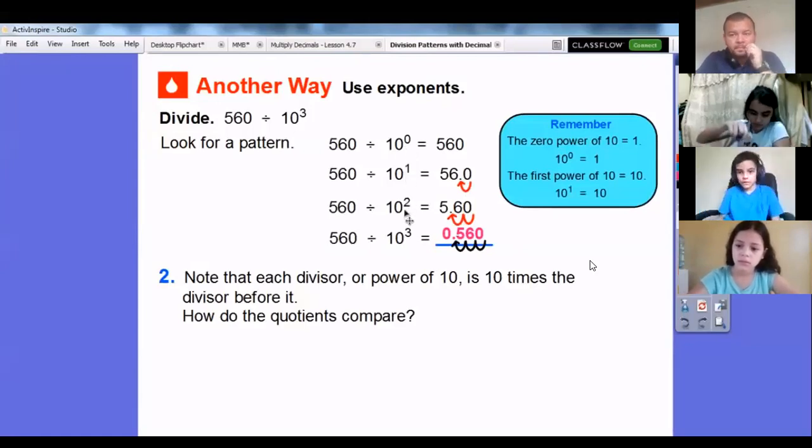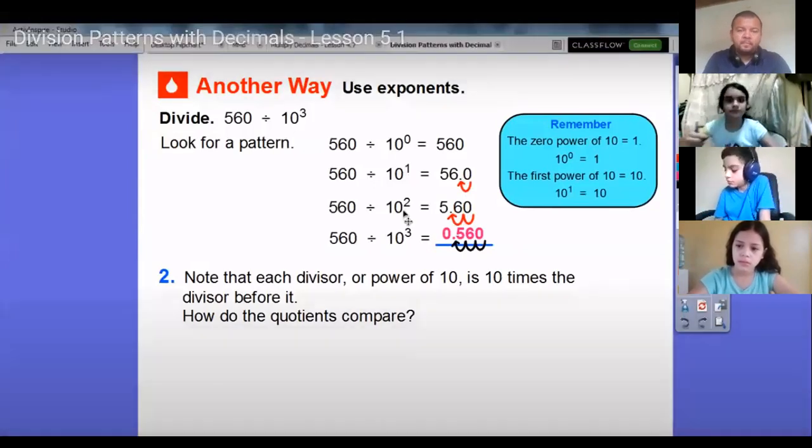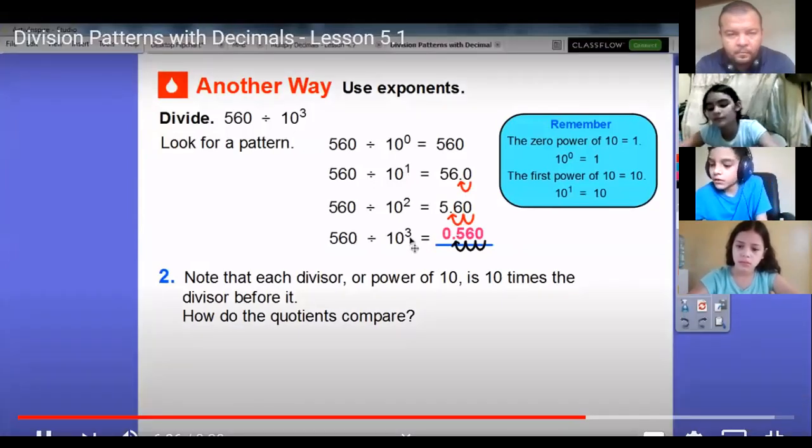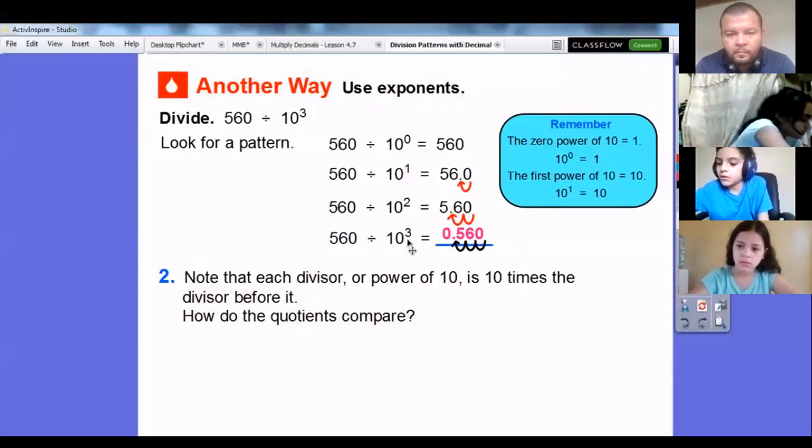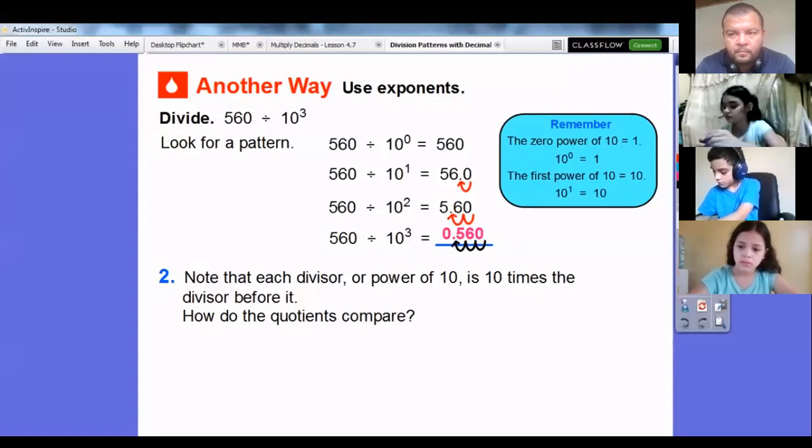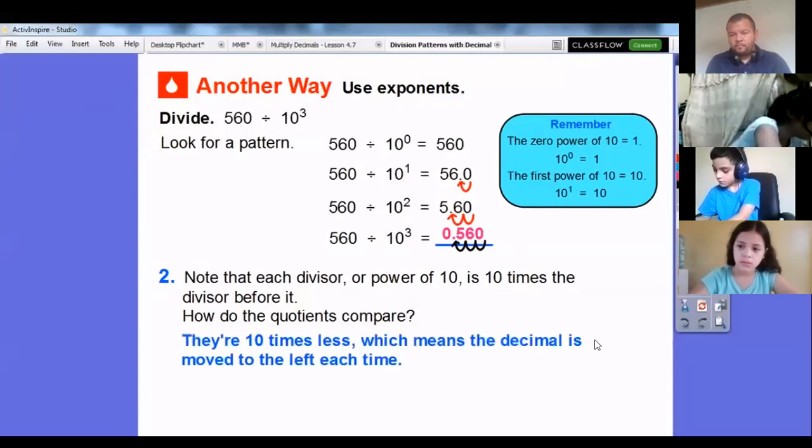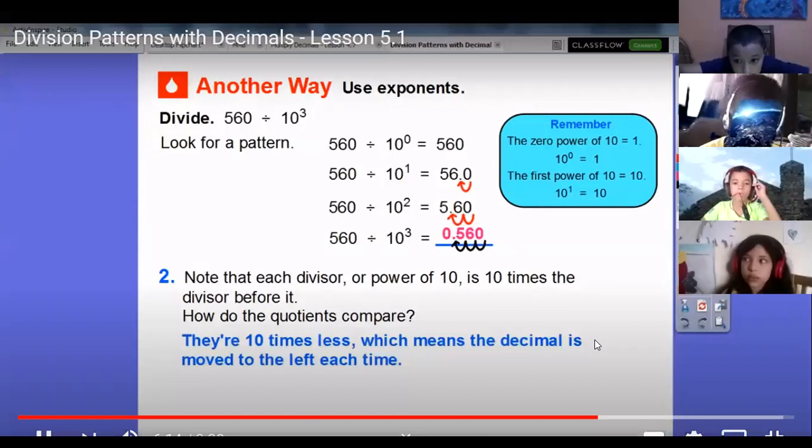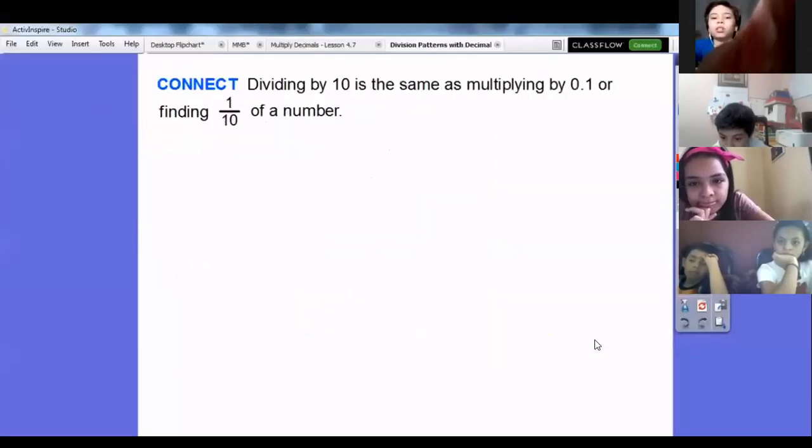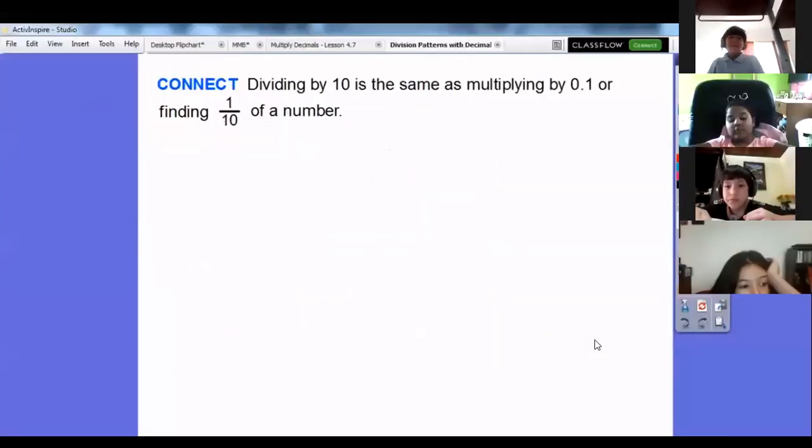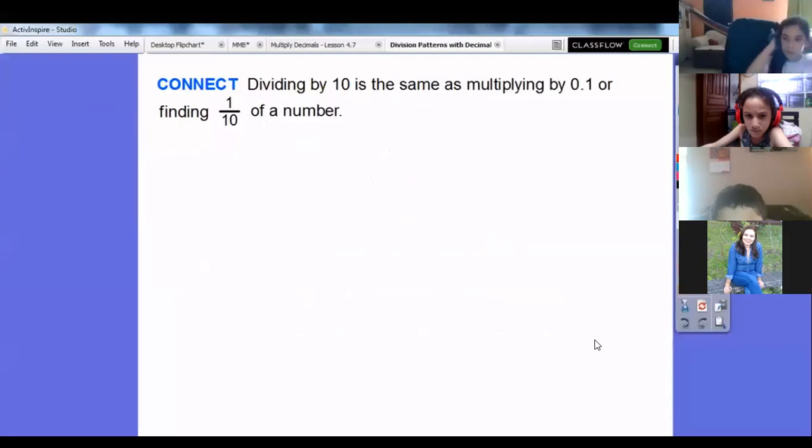Notice that each divisor is a power of 10 and 10 times the divisor before it. 10 to the first is 10 times 10 to the zero. 10 to the second is 10 times 10 to the first—this is 100, remember, 10 times 10 is 100. 10 to the third is 10 times 10 squared. How do the quotients compare? Well, they're 10 times less, which means the decimal is moved to the left each time.